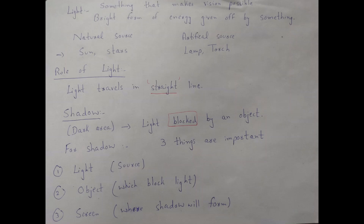A very important rule of light — please don't forget: light travels in a straight line. Light never ever moves in a zigzag manner. This is the reason shadows form, because light travels in a straight line, and if you place any object in front of light, it blocks the light — that's why the shadow is formed.